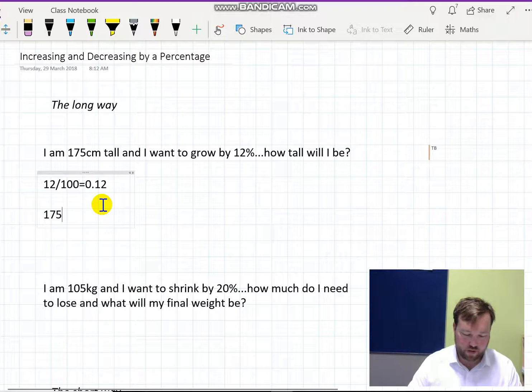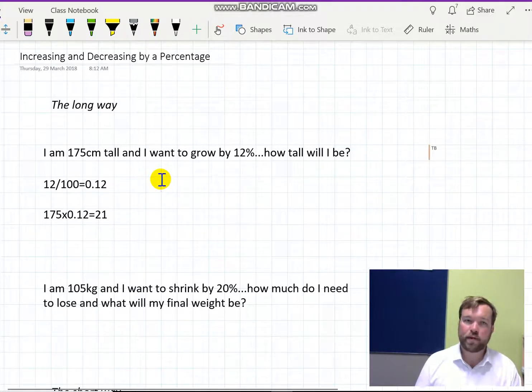So 175, 12% of that is 21 centimeters. If I want to grow by 12%, and now we know that 12% of 175 is 21, we take the 175 and add on that 21, and the new result is that height there in centimeters. Easy enough.